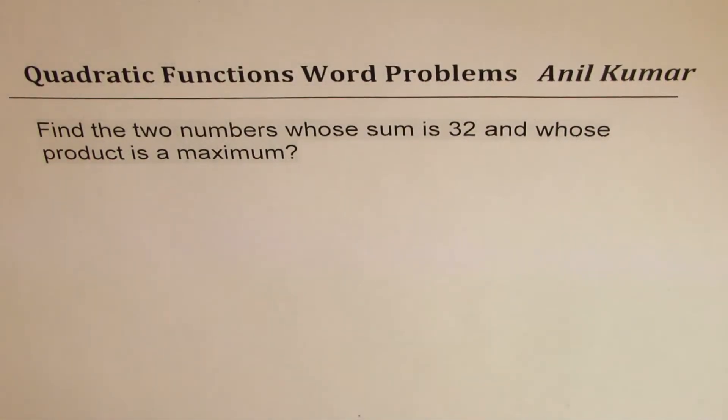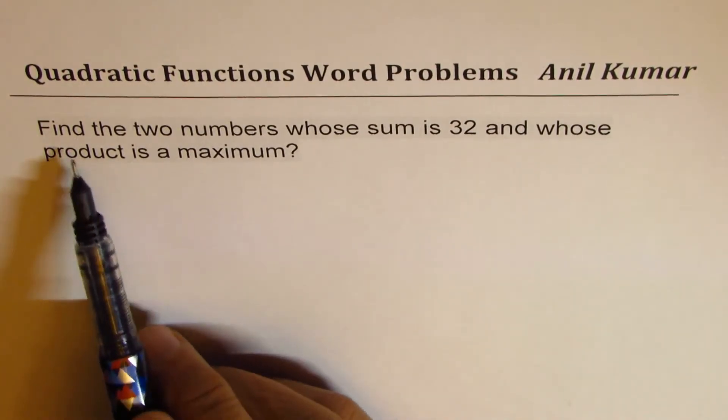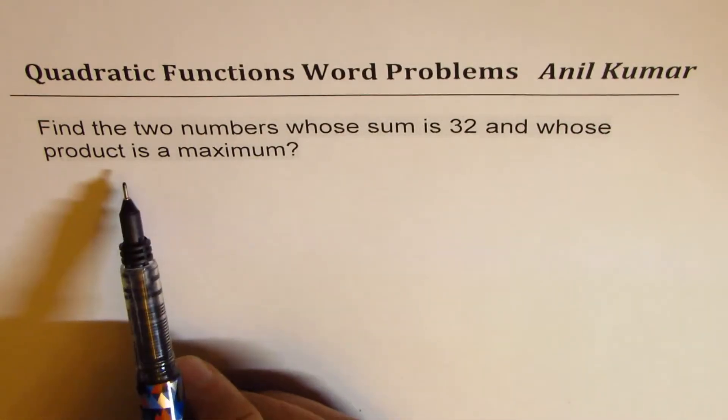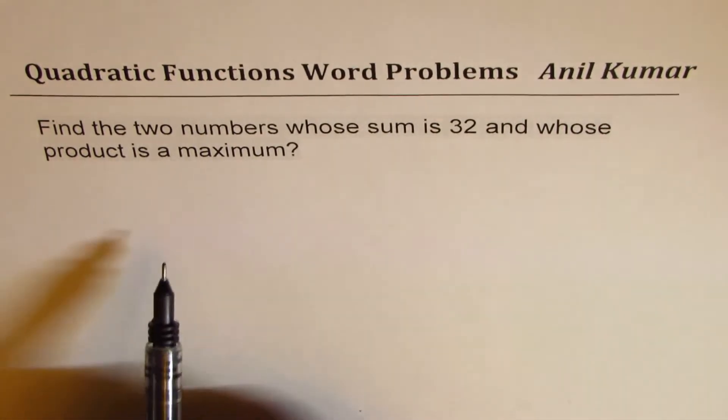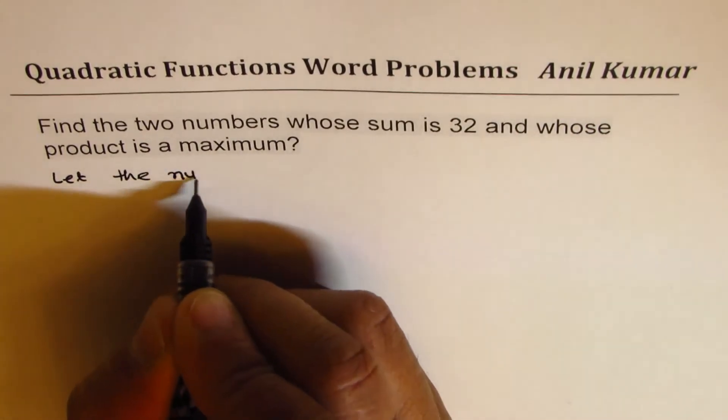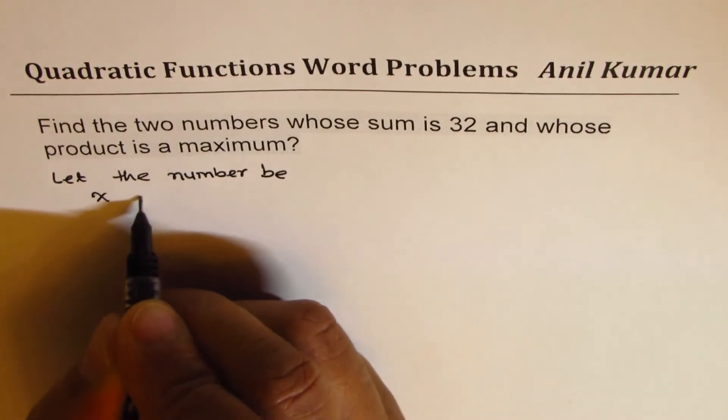Here is another question with numbers and this time we are going to maximize. The question is: find the two numbers whose sum is 32 and whose product is a maximum. So let's define, let the numbers be x and y.